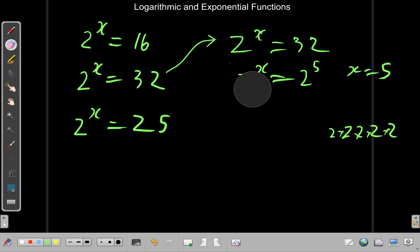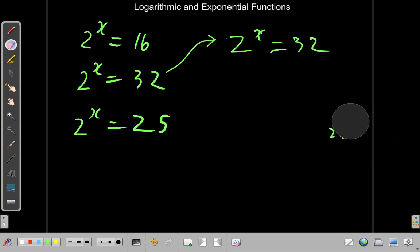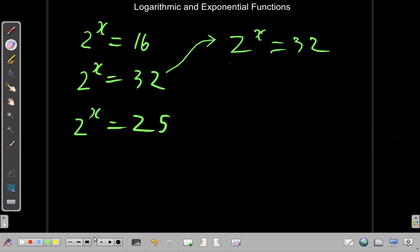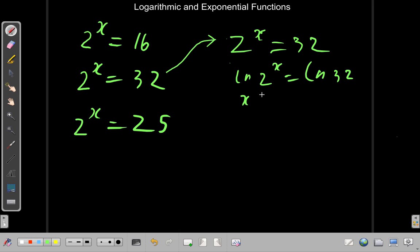If you do use logarithms, what you do, you find ln of 2 to the x is equal to ln 32. But, this is x ln 2, and x ln 2 would give you ln 32. So, when you divide both sides by ln 2, you get x would be ln 32 over ln 2.